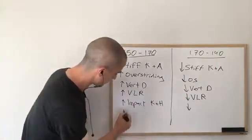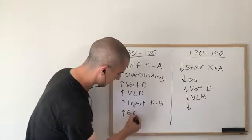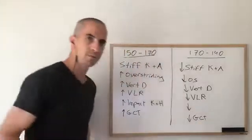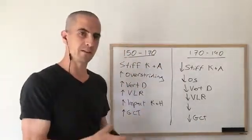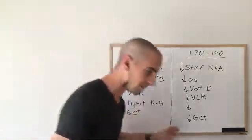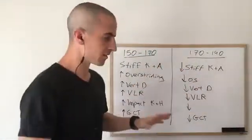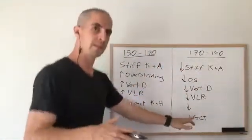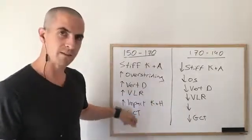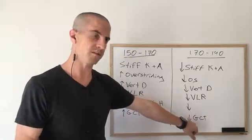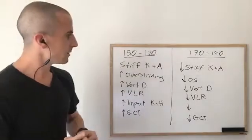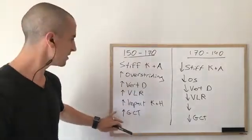The final finding is increased ground contact time at lower cadence, versus reduced ground contact time at higher cadence. Ground contact time is basically how long you're spending on the ground each time you strike the floor — running a bit more like a heavy thudder versus pitter-patting lightly. Again, a negative effect at lower cadence and a more positive biomechanical effect on the higher cadence side. If we sum up all these different biomechanical features together...